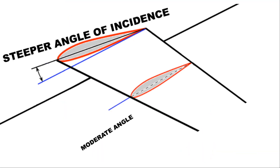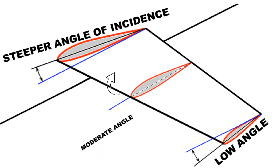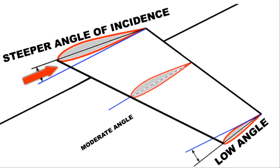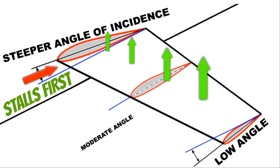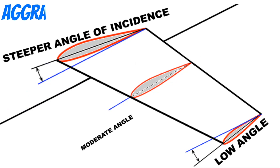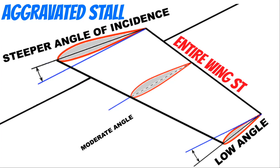Most airplanes these days are actually designed with a slight twist in each wing so that the wing root is always at a higher angle of attack than the wing tip. This means that your wing root will stall first and you'll lose lift a lot more gradually. So this inner part of the wing would be completely stalled while your wing tip is still holding up the airplane. But in an aggravated stall, the whole wing becomes stalled and drops like a sack of potatoes.